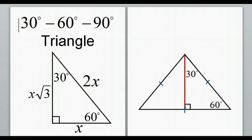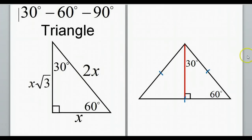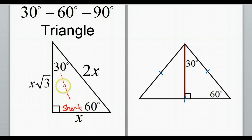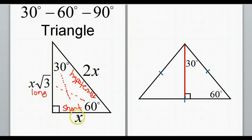The 30-60-90 triangle is the new one we have recently learned. Every 30-60-90 triangle has a short leg and a longer leg. The short leg is always across from the 30 degrees, and the long leg is across from the 60 degrees. Of course, there's also the hypotenuse. The short leg is our x, the long leg is x times radical 3, and the hypotenuse is 2 times x.